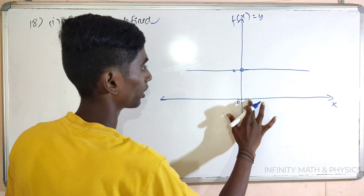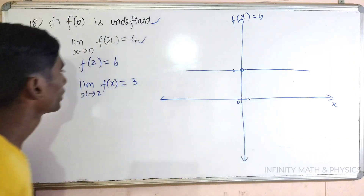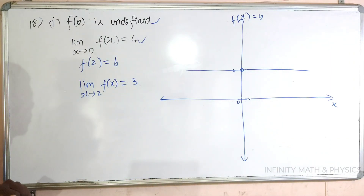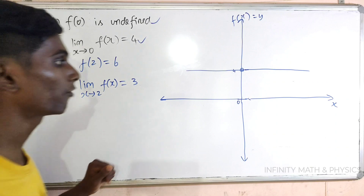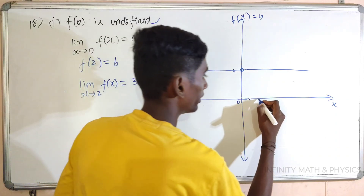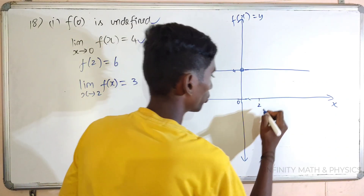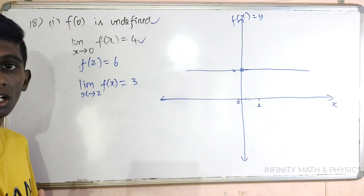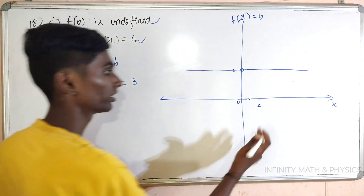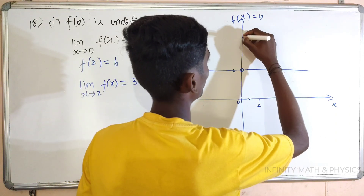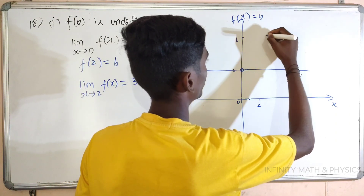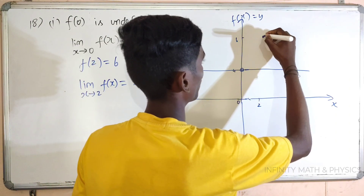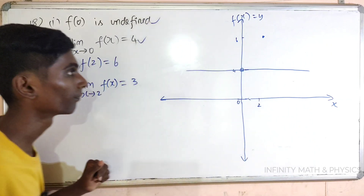Next, what is the condition? f of 2 is equal to 6. So f of 2 is equal to 6. Let's go to 6 — the point is defined.